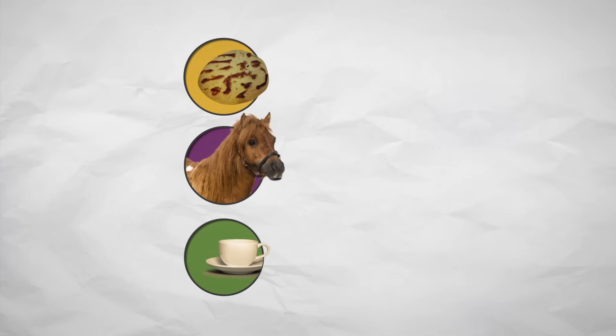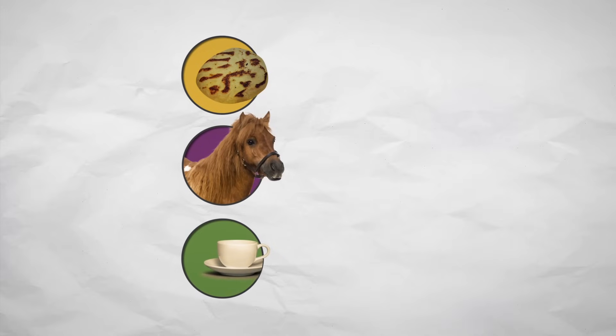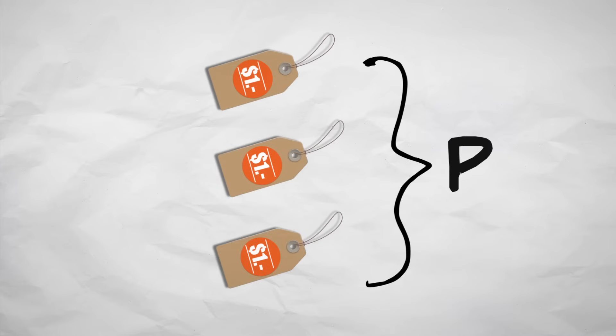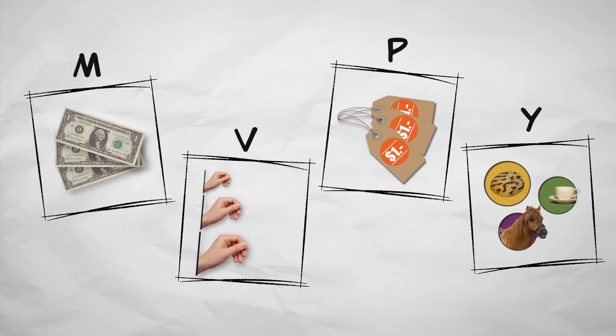The pupusa, pony ride, and coffee are real goods and services, which we'll call Y. And the price of those goods and services we'll call P. These are the variables in the quantity theory of money.